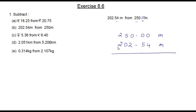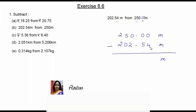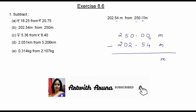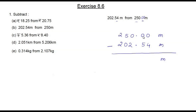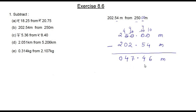Now let's subtract: 250.00 minus 202.54 meters. Since 4 cannot be subtracted from 0, we take a borrow. The 5 becomes 4, the first 0 becomes 10, and we pass 1 to the next — that 0 becomes 9, then 10, and then 9. So: 10 minus 4 is 6, 9 minus 5 is 4, keep the decimal point, 9 minus 2 is 7, 4 minus 0 is 4, and 2 minus 2 is 0. Our answer is 47.46 meters.